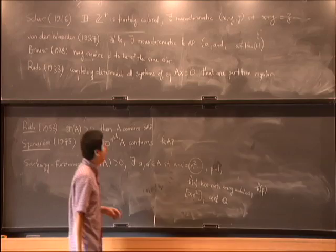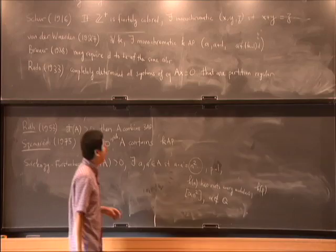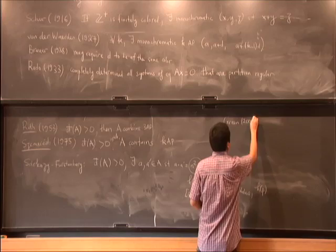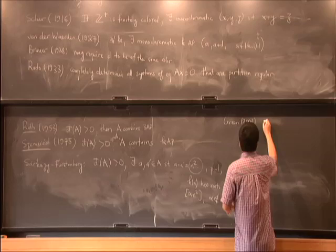So Green proved the following called Roth's theorem for the primes. If you have a set of positive relative density inside the primes, then still we can find an arithmetic progression of length three inside. That's it.